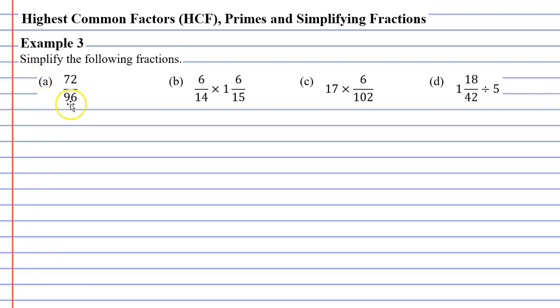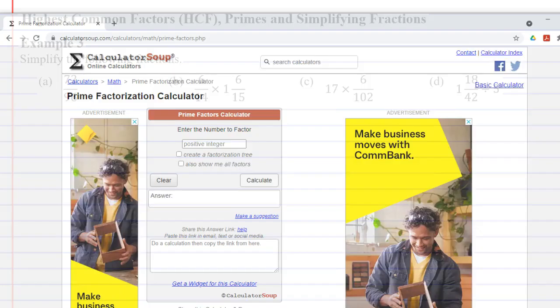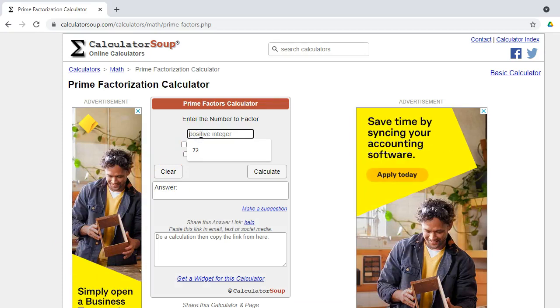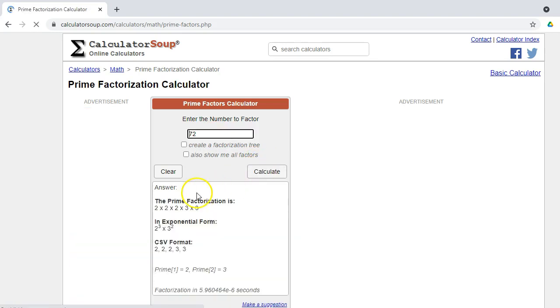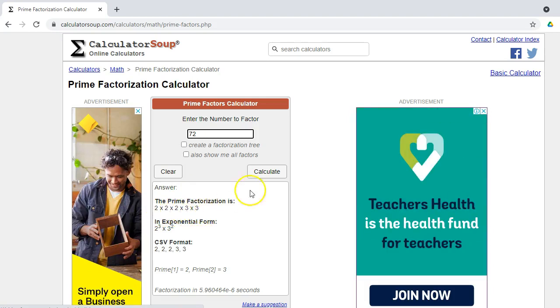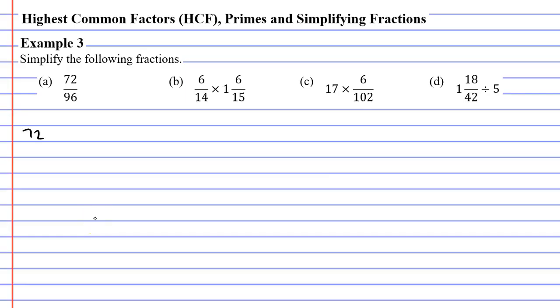So, we've got 72 over 96. Now, it takes quite a long time to find the prime factors of numbers. I'm going to save time. I've actually found a website here where you can just type the number in, and it will give you your prime factors. So, if I type 72 in here, it's going to calculate it. You'll see that my prime factors are 2 times 2 times 2, 3 twos, and 2 threes. So, we'll write 72 as 2 times 2 times 2 times 3 times 3.